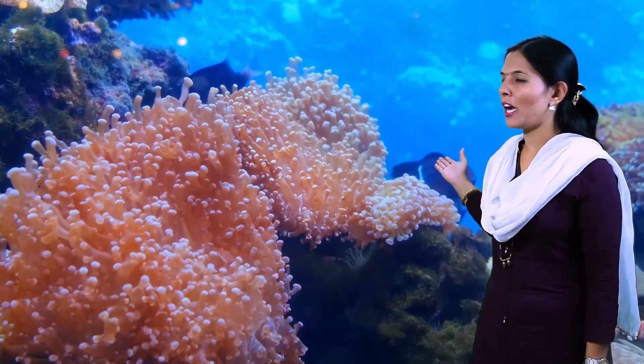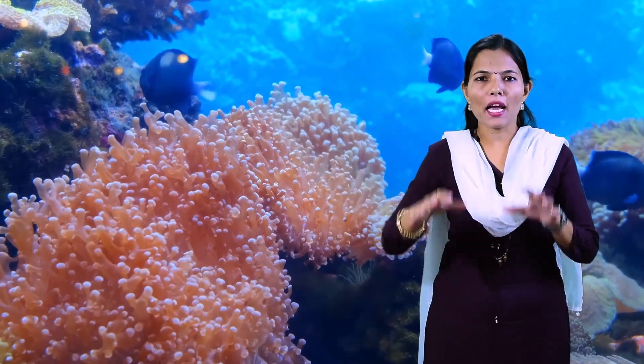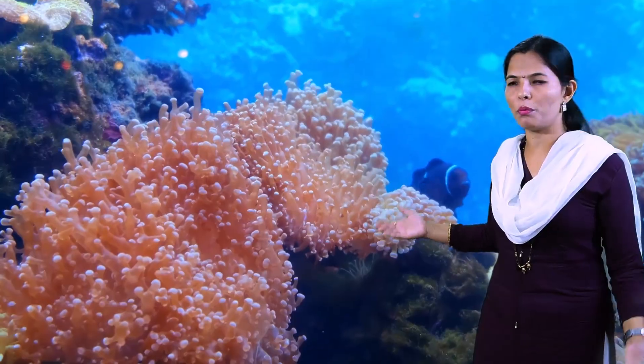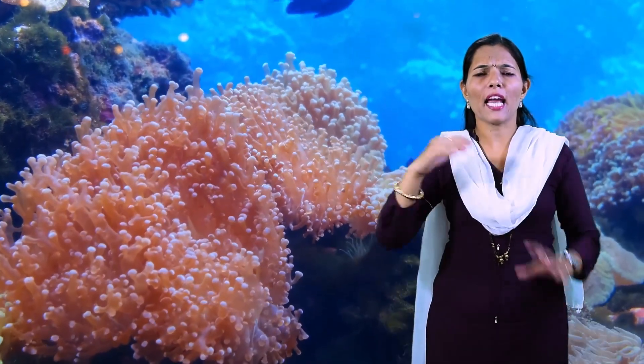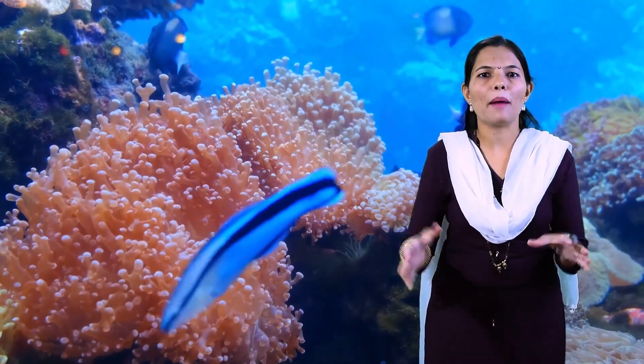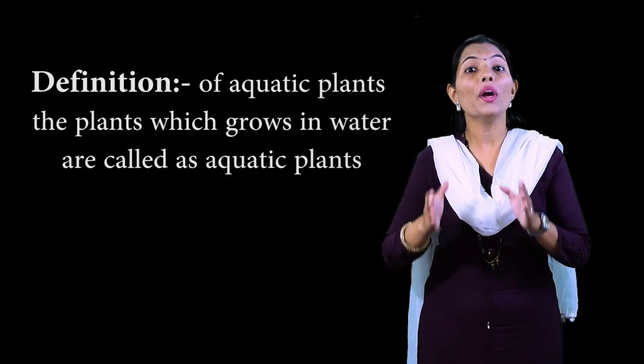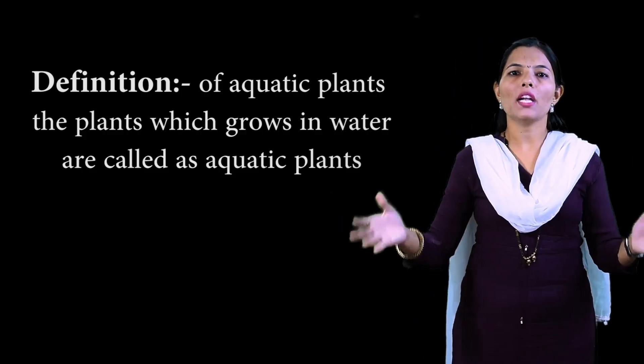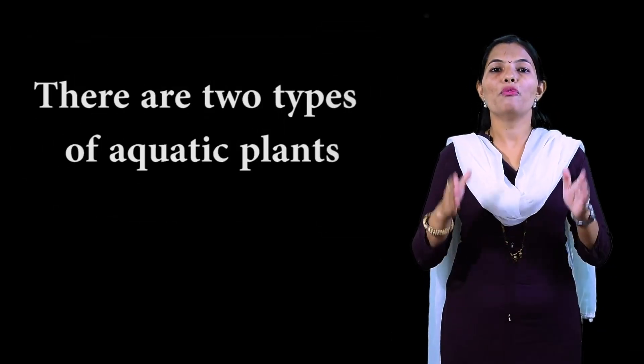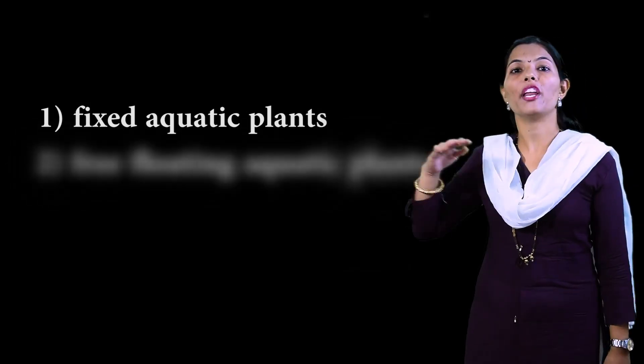So students, the first adaptation in this lesson is about aquatic plants. We have to study about adaptation in aquatic plants — how beautiful aquatic plants are in water. What are aquatic plants? 'Aqua' means water, and aquatic plants are plants which live or grow in water. There are two main types: fixed-rooted aquatic plants and free-floating aquatic plants.